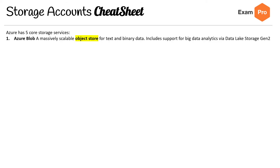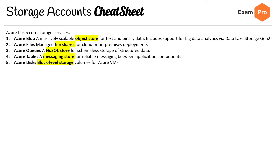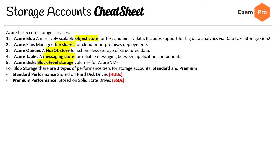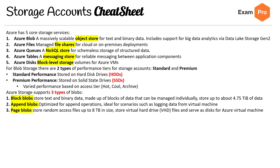Azure has five core storage services: Azure Blob, Azure Files, Azure Queues, Azure Tables, and Azure Disks. Know the difference between these five. For blob storage, there are two types of performance — standard and premium. Standard is when you're using hard disk drives; premium is when you're using solid state drives. Azure storage supports three types of blobs: block blobs, append blobs, and page blobs. Please take the time to read these and understand the difference.